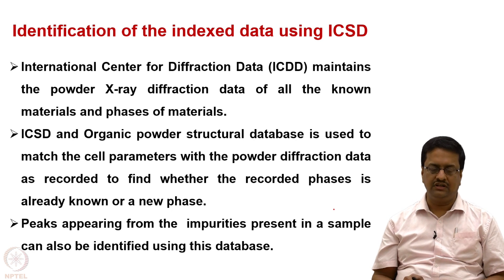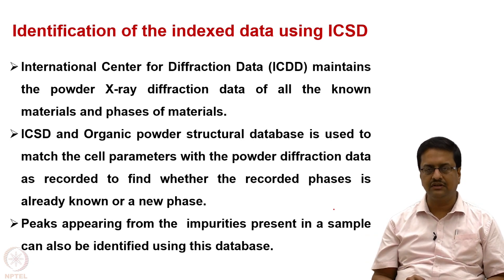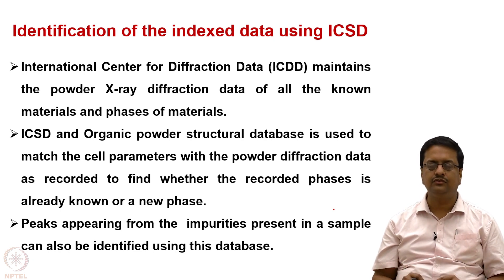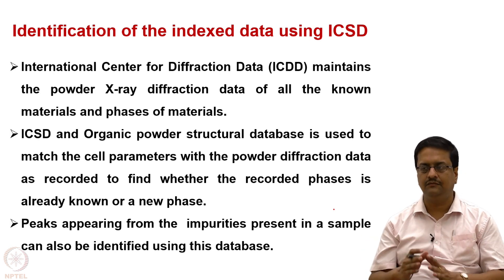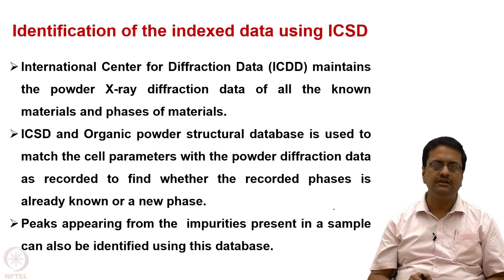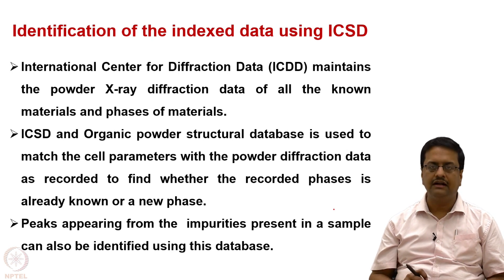If we know the history of a sample — how it was made — we can use these databases to identify impurities. For example, if a solid-state reaction was performed by reacting two oxides at high temperature to make a new material, and the new material contains some starting oxide, tiny peaks from those starting materials would appear in the final powder pattern. One can then identify those peaks by comparing the observed pattern with the reported patterns for the starting materials.